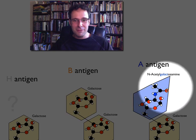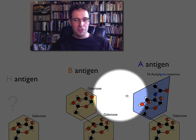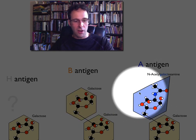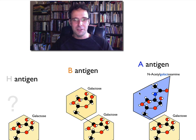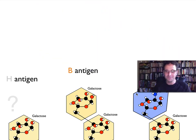It's just a slightly different shape because of that nitrogen-containing group, and that's of course why it's given a different geometric shape to represent it.